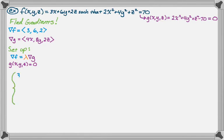So our system, when we actually write it out, is: 3 equals lambda 4x, 6 equals lambda 8y, 2 equals lambda 2z. And then finally g(x,y,z) equals 0. We get 2x squared plus 4y squared plus z squared equals 70. That's the thing that's going to let us actually find values. Otherwise we have too many unknowns because of lambda.